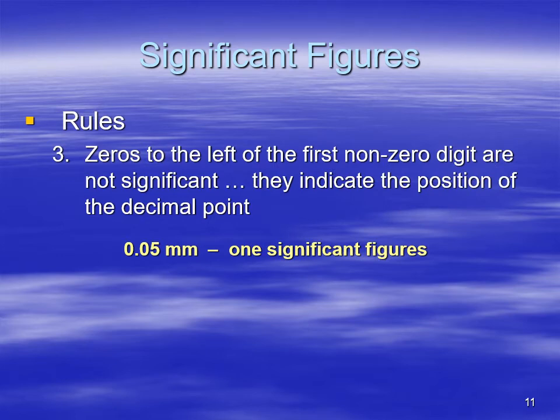Rule number three: zeros to the left of the first non-zero digit are not significant — they tell you the position of the decimal point. Here we have a value of 0.05 millimeters. The only significant figure there is the five, and we have uncertainty in that one.